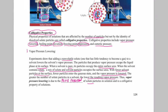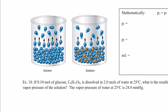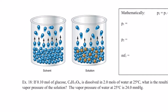Let's look at two beakers to help understand this. The beaker on the left is pure solvent — let's say water. What's at the surface of my liquid? Just water particles. They can leave the surface if they have enough kinetic energy and enter the gaseous phase, and when they do, those gas particles will exert a certain vapor pressure, which is dependent upon the temperature.